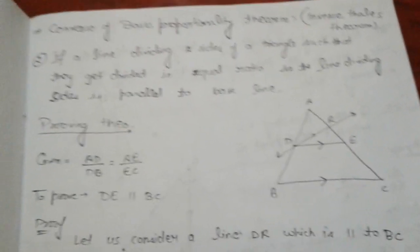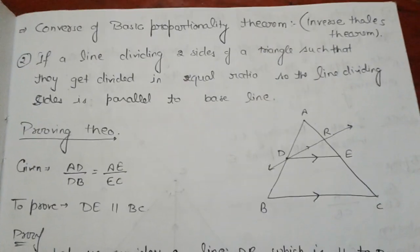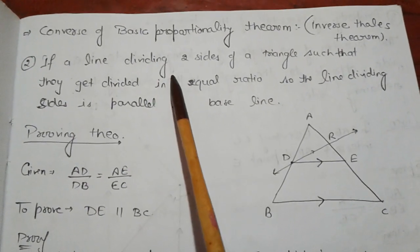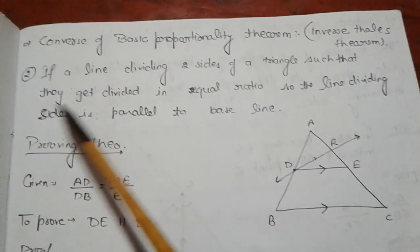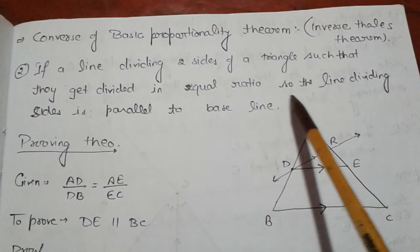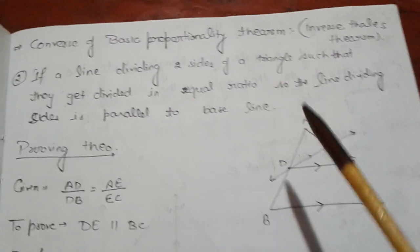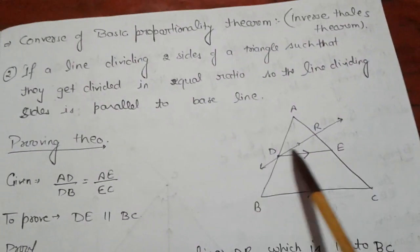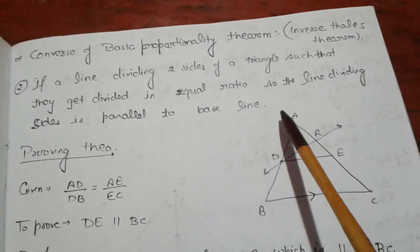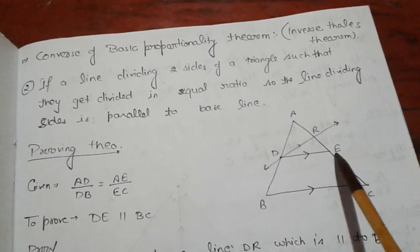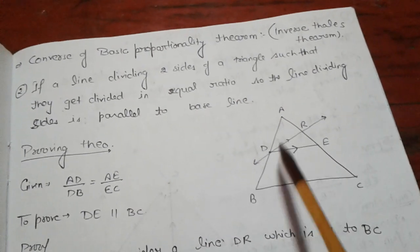Now let's see the converse of the Basic Proportionality Theorem. In the converse, the condition which was given to you earlier will be asked, and the condition which you proved will be given. So here: if a line divides two sides of a triangle such that they get divided in equal ratio, then the line is parallel to the base. We have to prove that if DE intersects AB and AC in the same proportion, then DE is parallel to BC.